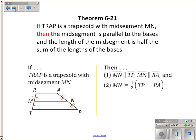Theorem 6-21 is about trapezoid midsegments. If you draw a midsegment through the midpoints of the two non-parallel sides, the theorem says the midsegment is parallel to the bases, and its length equals half the sum of the lengths of the bases. It's similar to a midsegment of a triangle, but now it's half the sum of both bases — think of it as the average of the two bases.